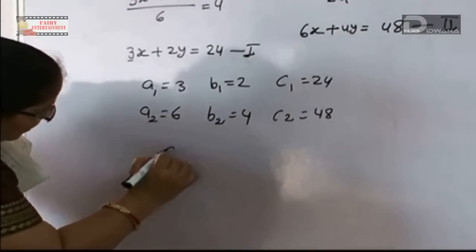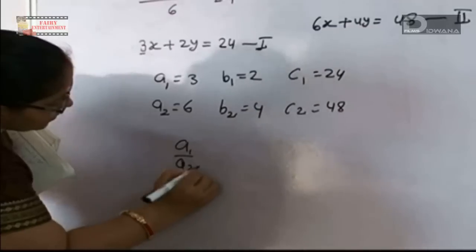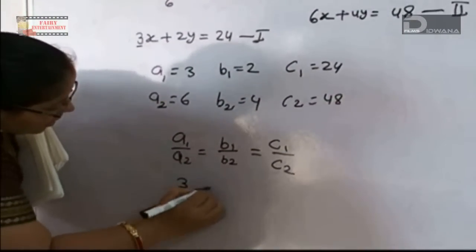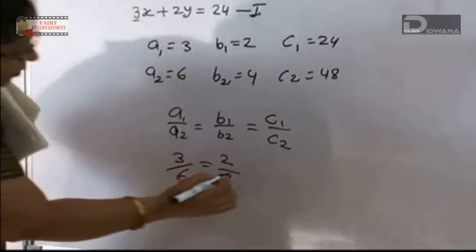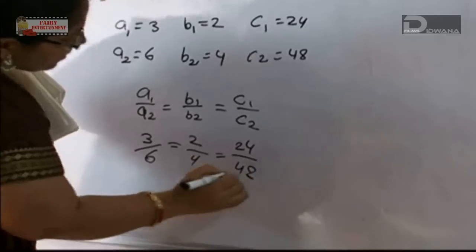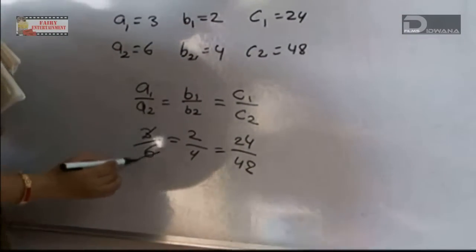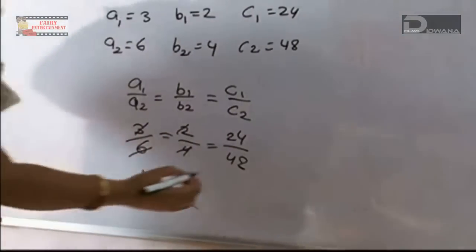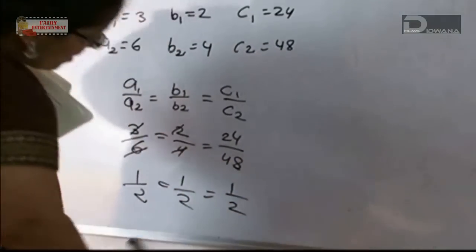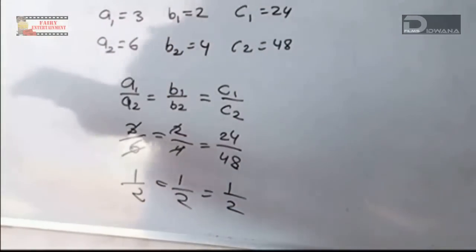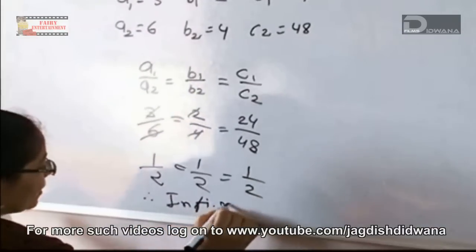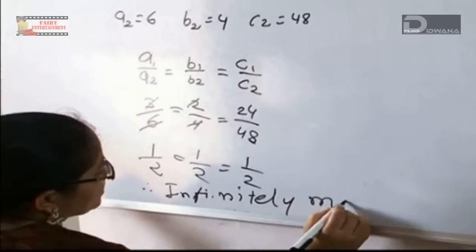Now we use the formula a1 upon a2 equal to b1 upon b2 equal to c1 upon c2. Putting the values: 3 upon 6 equal to 1 upon 2, 2 upon 4 equal to 1 upon 2, and 24 upon 48 equal to 1 upon 2. Here all the values are 1 upon 2, so the answer will be infinitely many solutions.